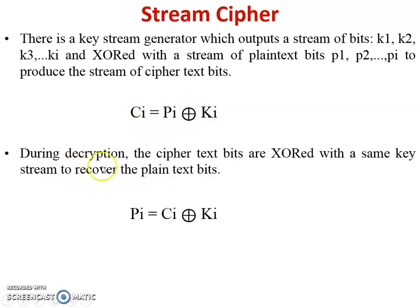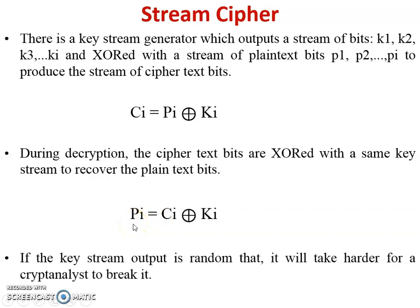Similarly, in the decryption process, the input is cipher text and the key bit. So C1 XOR K1 generates the first bit of plain text, which is P1. To provide more security in stream cipher, if the key stream output is random, it will be harder for a cryptanalyst to break it.